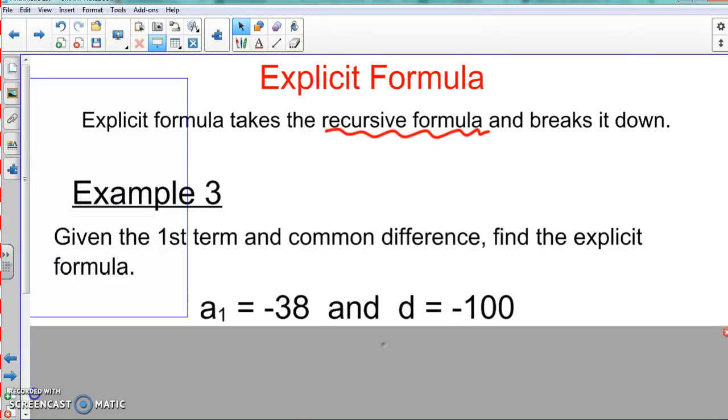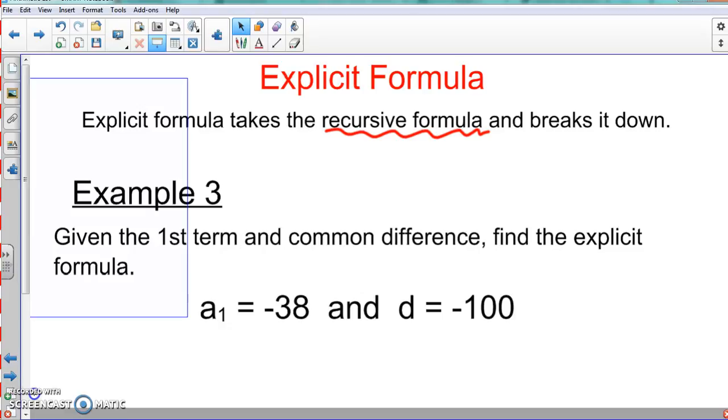So here's Example 3. We're given the first term and common difference, and we're going to find the explicit formula. So a₁ equals -38 and d equals -100.